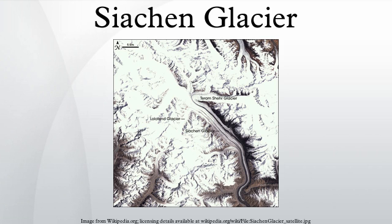One of the reasons cited for the recent glacial retreat is chemical blasting done for constructing camps and posts. In 2001, India laid oil pipelines inside the glacier to supply kerosene and aviation fuel to the outposts from base camps. As of 2007, the temperature rise at Siachen was estimated at 0.2 degrees Celsius annually, causing melting, avalanches, and crevasses in the glacier.